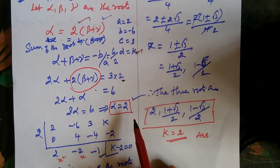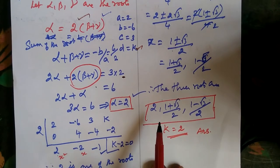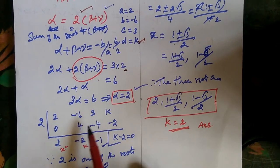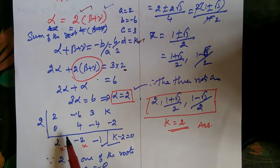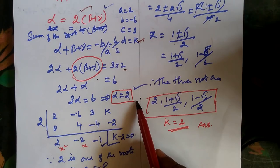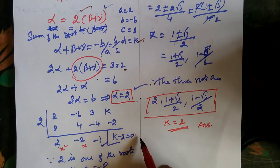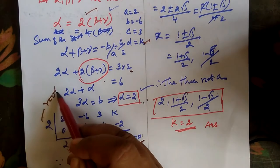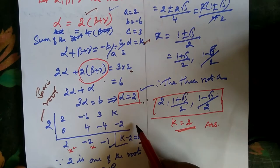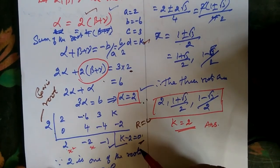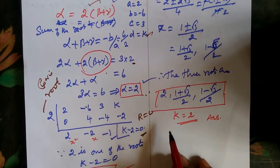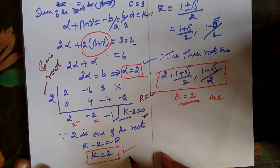Using synthetic division, since α = 2 is a root, the remainder r equals 0 by the condition. One factor root equals 0, so k - 2 equals 0, which implies k equals 2. So the k value is 2.